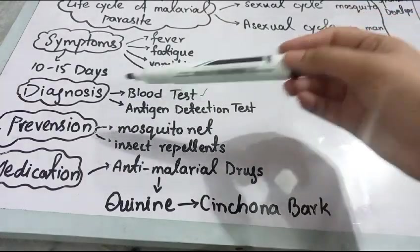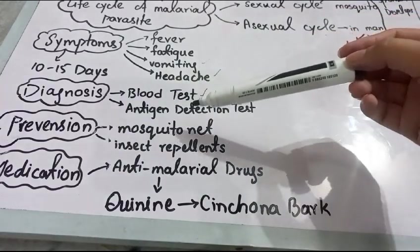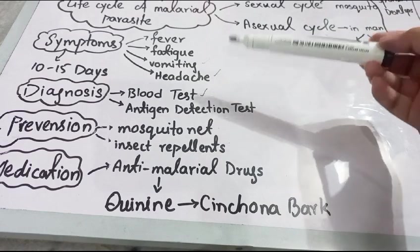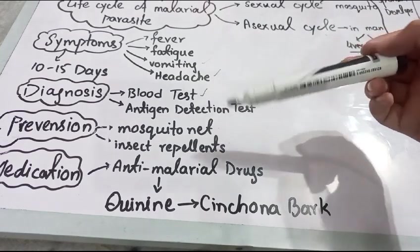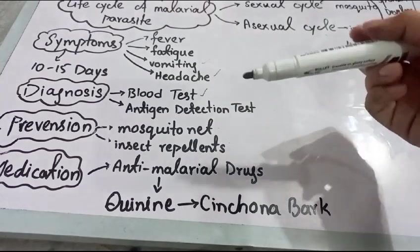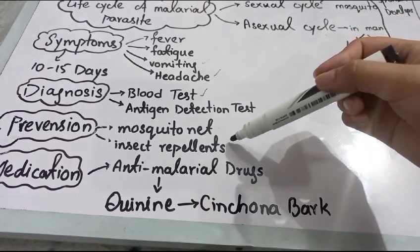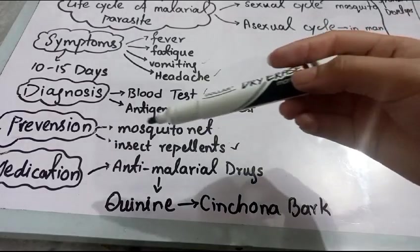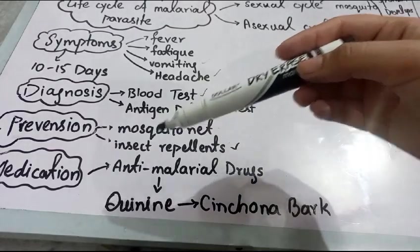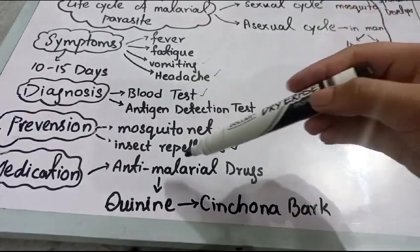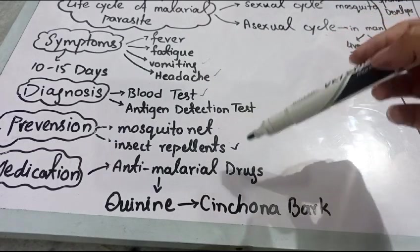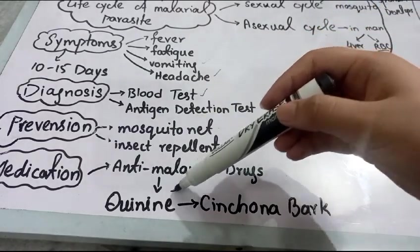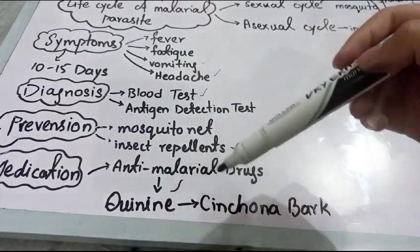There are some preventive measures — you can use a mosquito net in order to prevent yourself from malaria, and you can also use insect repellents. The medication for malaria is anti-malarial drugs, and the most important drug is quinine.